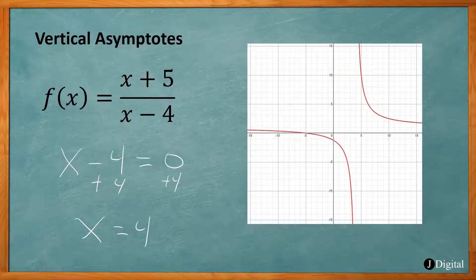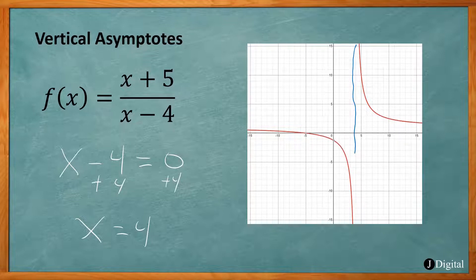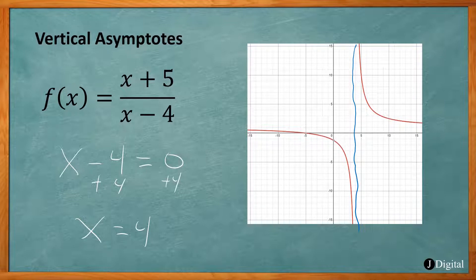Look at the graph here. At x = 4, I have a vertical asymptote. Both of these red lines are going to approach this line, get closer and closer to it, but never cross it. Likewise, on the upper side, it's going to get closer and closer to that blue line and never cross it. This blue line is not part of the graph.